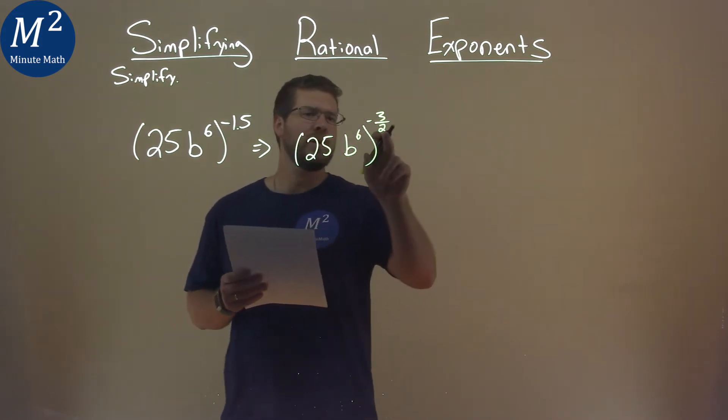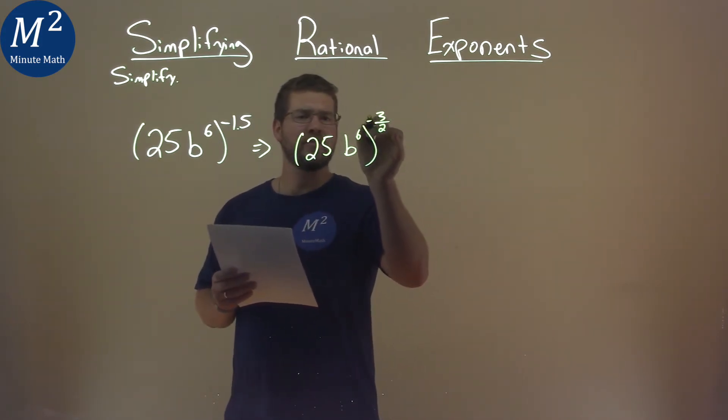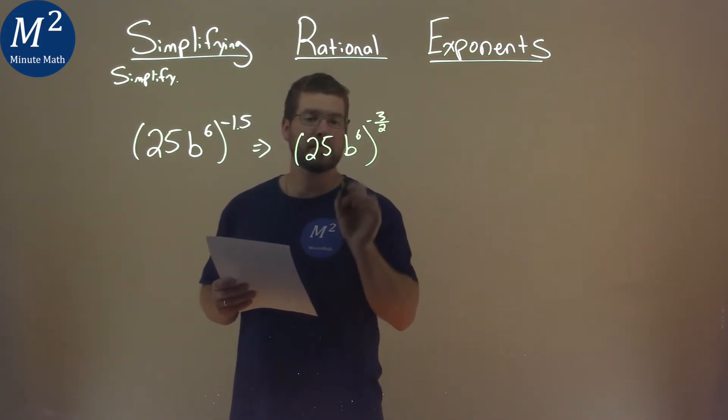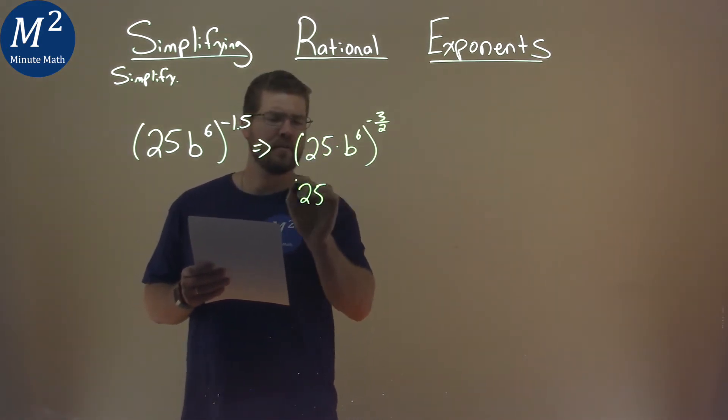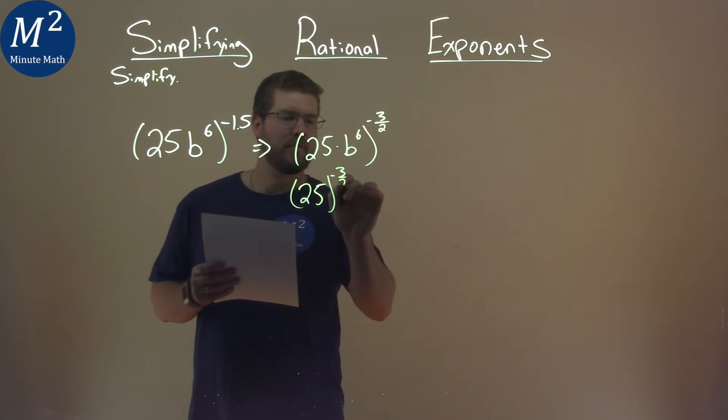Now our rules with exponents, we're distributing it essentially to both parts here, this being multiplied. So to do that, we have 25 to the negative 3 halves power.